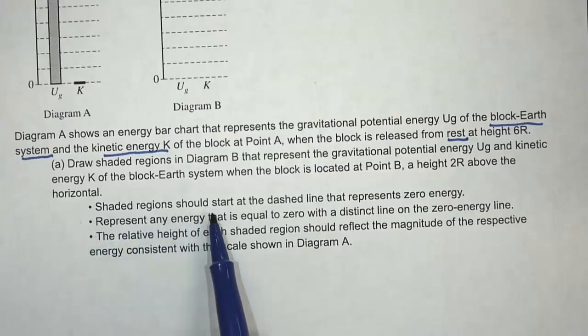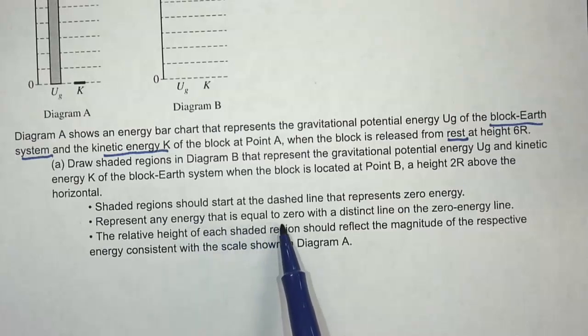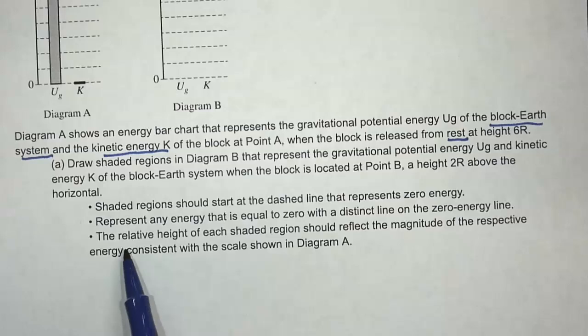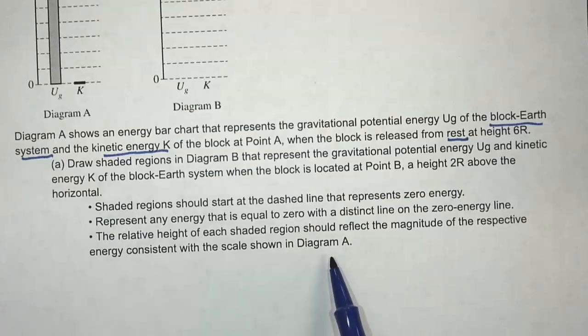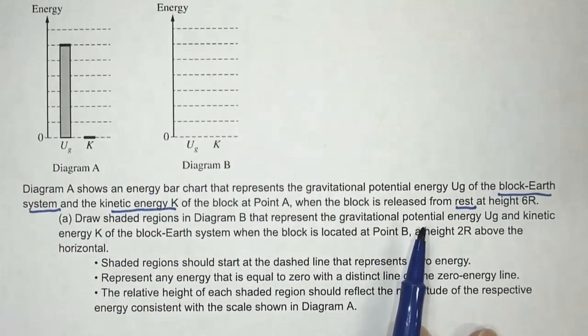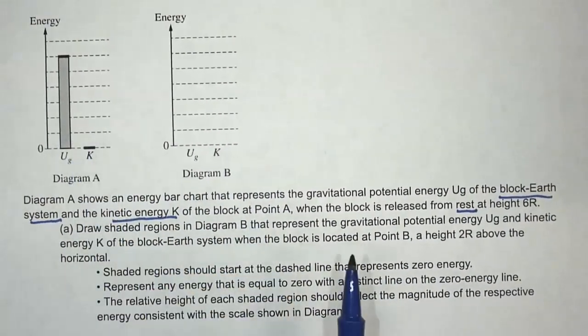Shaded regions should start at the dashed line that represents zero energy. Represent any energy that is equal to zero with a distinct line on the zero energy line. The relative height of each shaded region should reflect the magnitude of the respective energy consistent with the scale shown in diagram A.